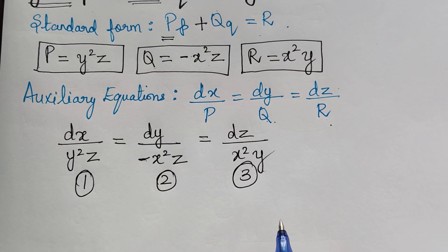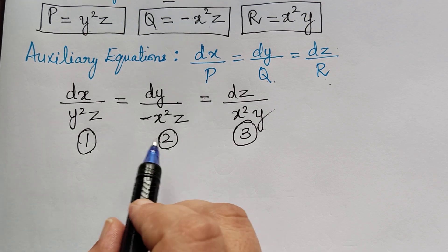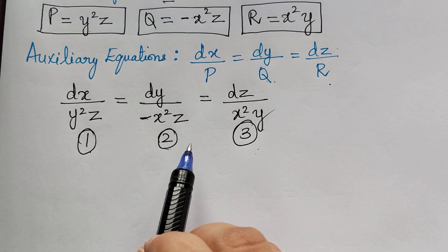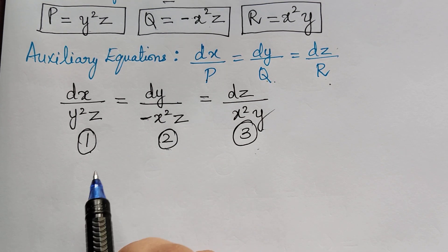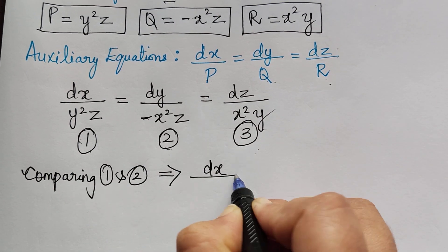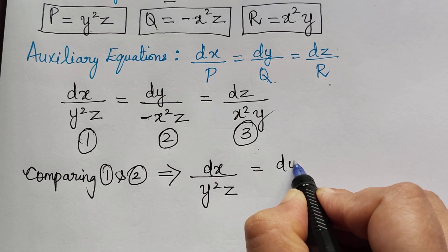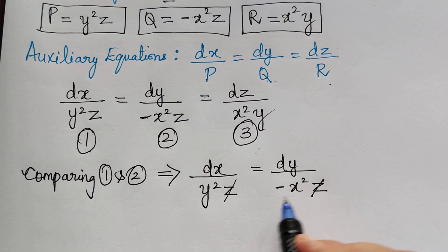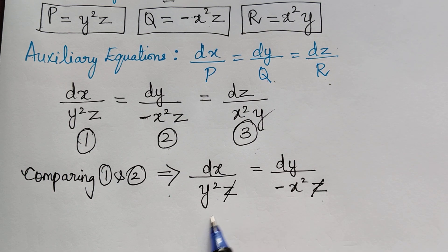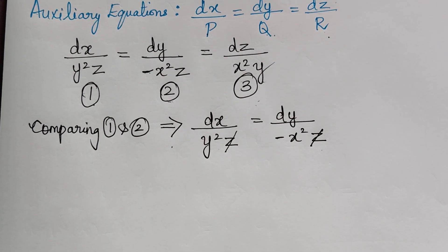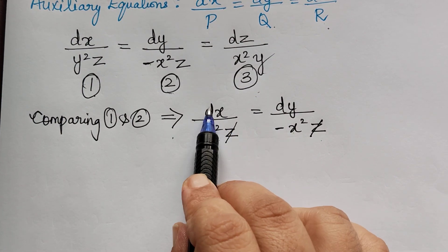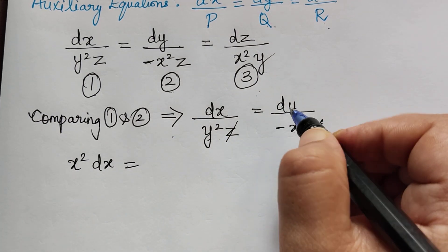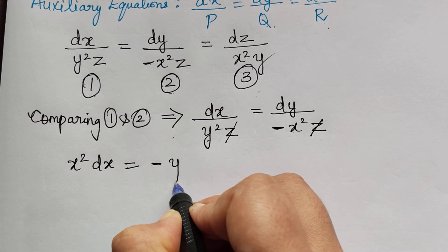Now we will compare these equations to get the solution. I am choosing to compare equations 1 and 2, though you may choose any pair. Taking equations 1 and 2: dx/(y²z) = dy/(−x²z). We can cancel z on both sides, then cross-multiply and gather x terms on one side and y terms on the other — the variable separable method — giving x²dx = −y²dy.